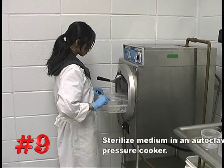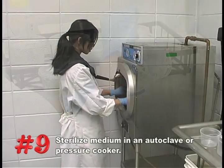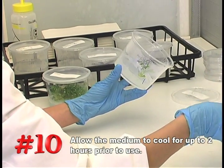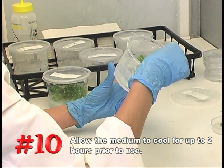Number nine, sterilize the medium in an autoclave or pressure cooker. Number ten, allow the medium to cool for up to two hours or until the gelling agent is completely solidified prior to use.